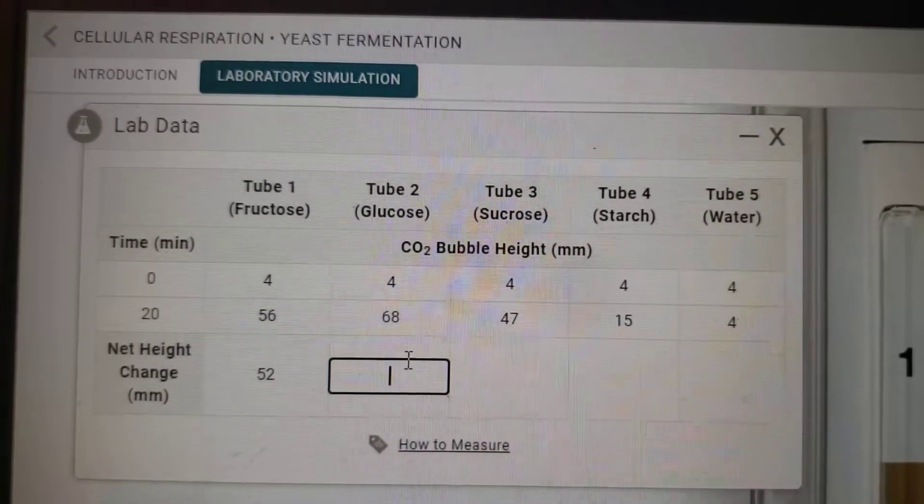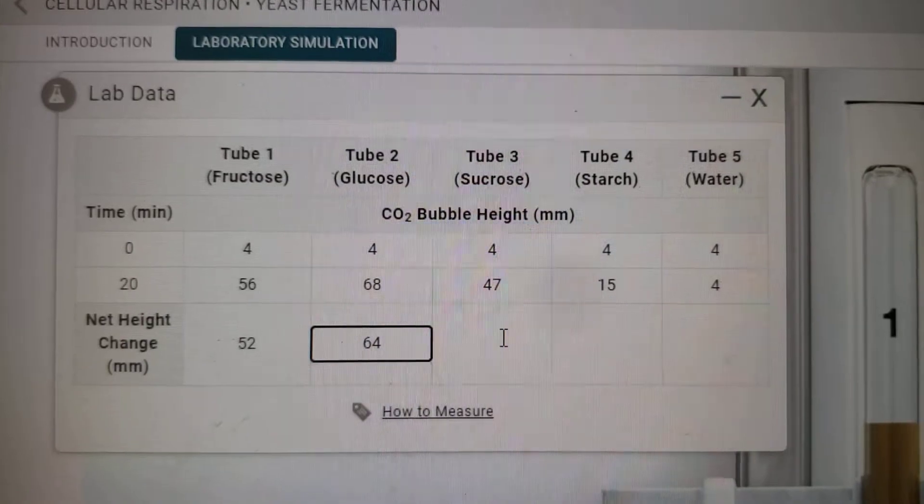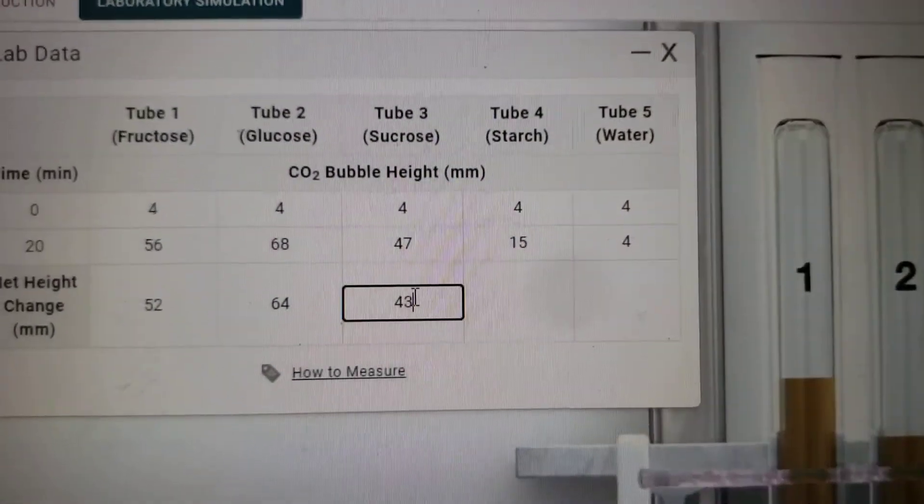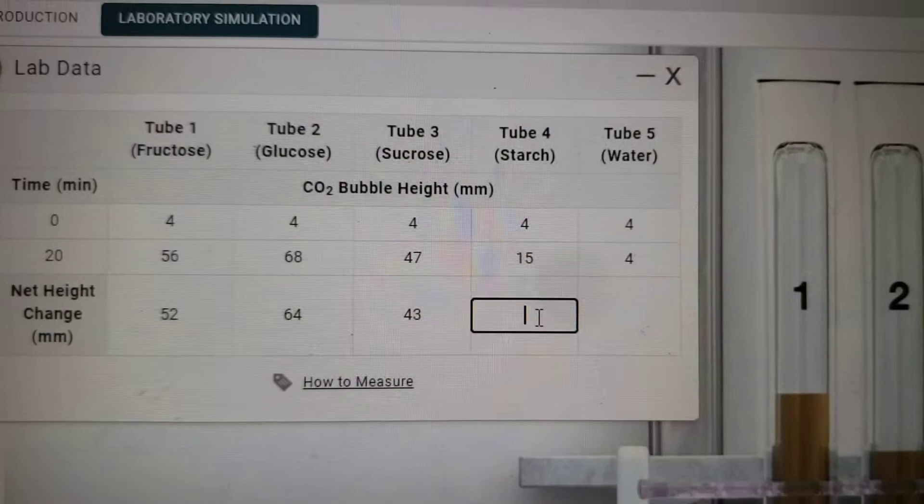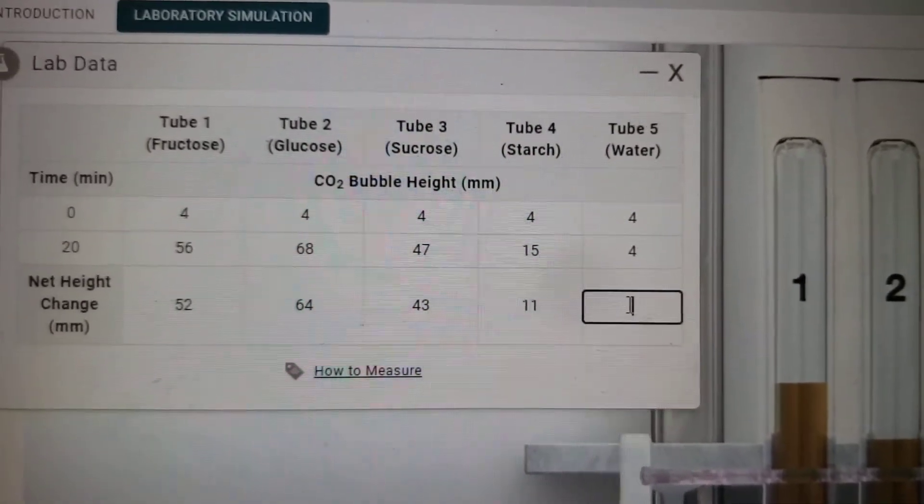Now 68 minus four is 64, 47 minus four is 43, 15 minus four is 11, and four minus four is zero.